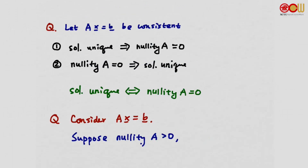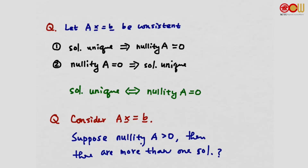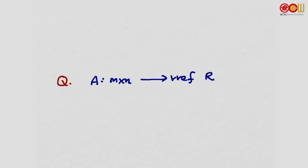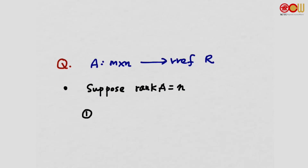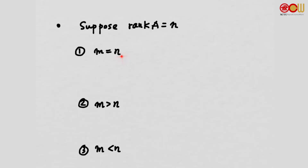Another question: if nullity(A) is a positive number for a consistent system, I'll leave that as an exercise. A few more questions on rank. Suppose A is an m by n matrix with rank(A) = n. Let's consider three scenarios for the reduced row echelon form R: when m = n, when m > n, and when m < n.